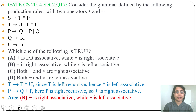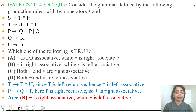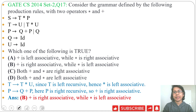We convert ambiguous grammar to unambiguous grammar by using precedence and associativity rules. Just remember: if one grammar is left recursive, then the operator is left associative; if one grammar is right recursive, then the operator is right associative. If this lecture is helpful for you, please like and subscribe.